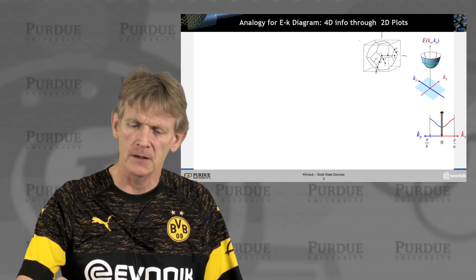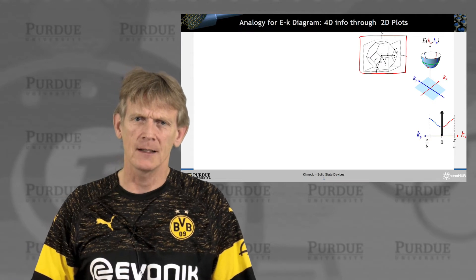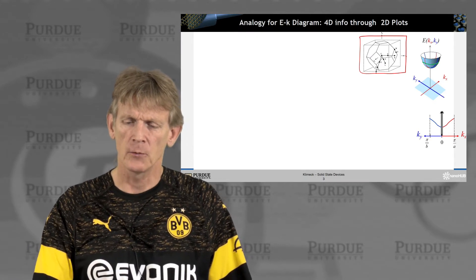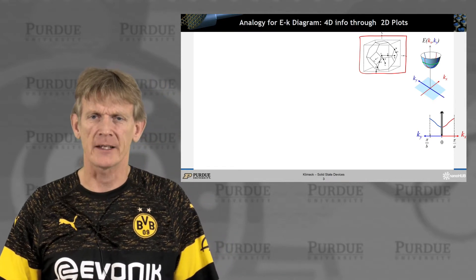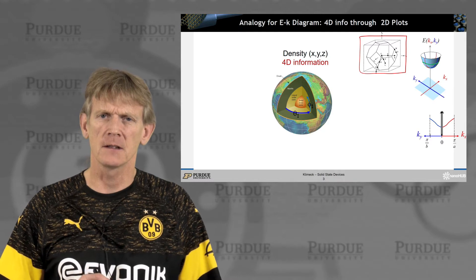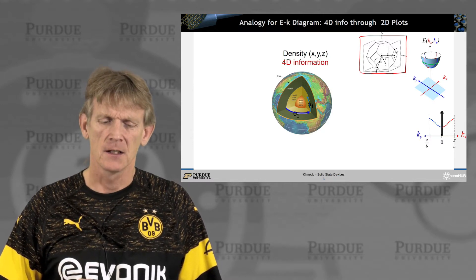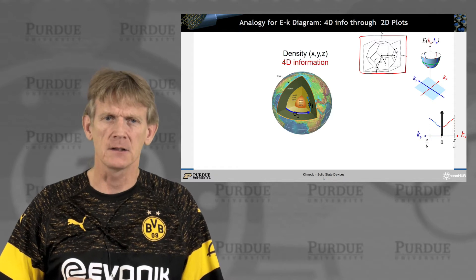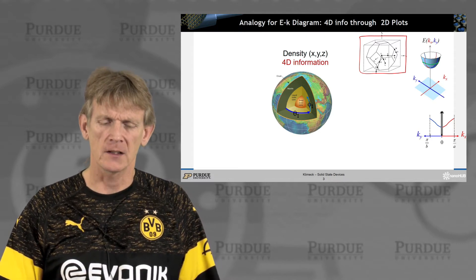All right, again, we have this rather complicated-looking Brillouin zone for a diamond lattice, and we want to represent information according to certain crystal directions. And that is somewhat resemblant of having a set of information like a four-dimensional data set, where you have information like density or temperature or something in a coordinate system of x, y, and z,